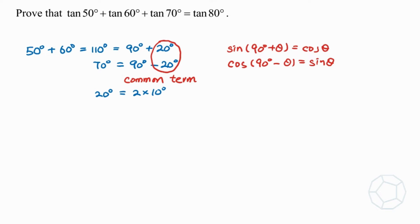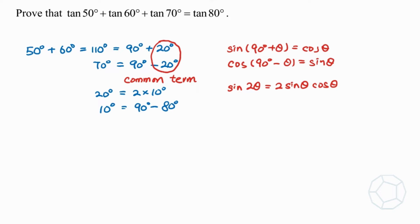Let's remind ourselves of the double angle formula: sine(2 theta) is equal to 2 sine theta cosine theta. And lastly, to relate 10 degrees with 80 degrees on the right hand side of the identity, we can write 10 degrees as 90 degrees minus 80 degrees. Finally, we will apply the formula sine(90 degrees minus theta) equals to cosine theta. So on the left hand side, we'll have the relationship between angles, and the right hand side will have trigonometric formulas.